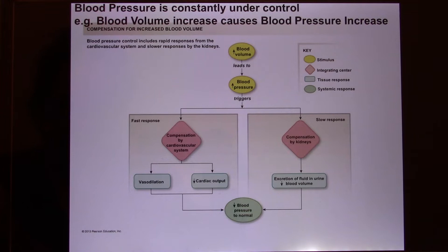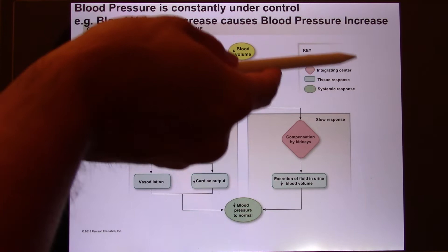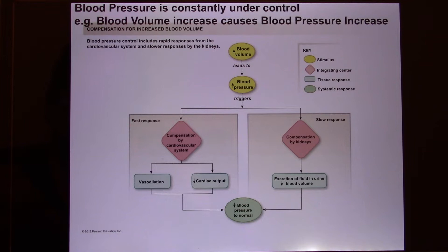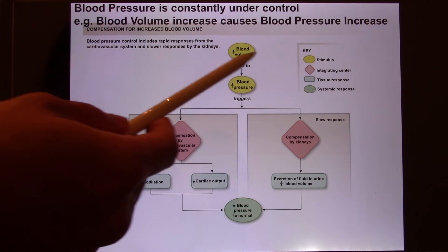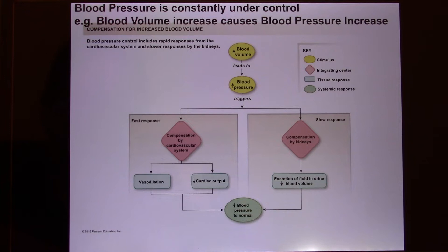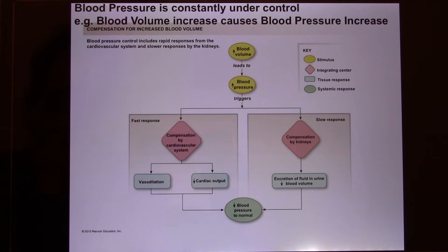We talked about this in Unit 1: stimulus, integrating center, and tissue response. The stimulus here is blood pressure increase — blood volume increase. For example, the poor lady who drank two liters of water to win a bet for her kids: your blood volume increases, and because your cardiovascular system is a closed circle, increasing blood volume increases blood pressure. When blood pressure increases, your body has sensors called baroreceptors — stretch receptors located in your big blood vessels, the aorta and carotid artery — that constantly monitor your blood pressure.